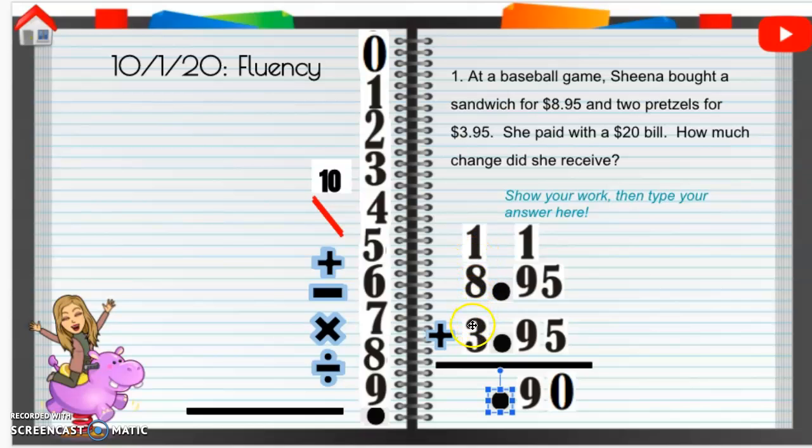So, now 8, 9, 10, 11, 12. So what she paid is 12, well, what her total is, I'm sorry, her total is $12.90. She paid with a $20 bill. So if she pays with $20, how much change will she receive?